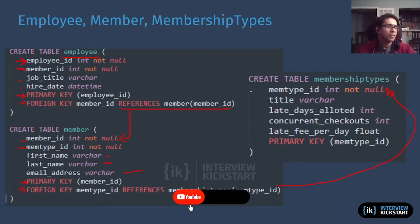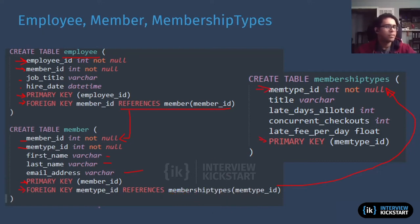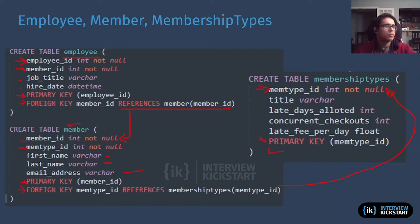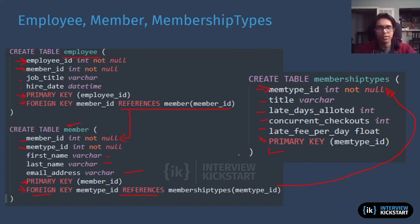Then you have your membership types table — that's your primary key here. One thing to note is that the foreign key reference is done in the table that it's going to join to. So there's no foreign key referential integrity statement in the membership types table itself — it's just in the table that's going to be using it. Member here is going to be joining to membership types, so that's why we have that statement there. Membership types is pretty simple, with attributes like title, the number of late days, the fee, and so on.